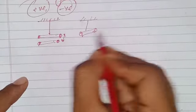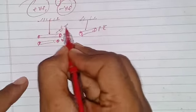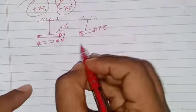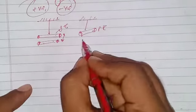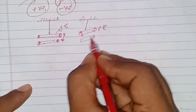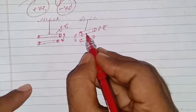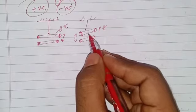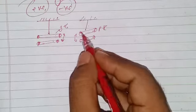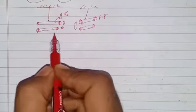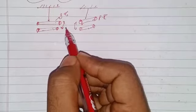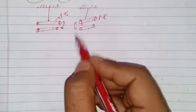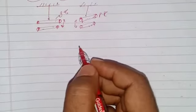In the second part of the experiment, a plastic rod rubbed with wool was placed near the glass rod rubbed with silk. Since they acquired different types of charges (different polarity), attraction was observed. From this experiment, it became clear that similar charges repel and dissimilar charges attract.